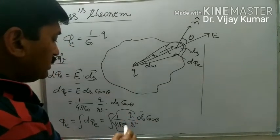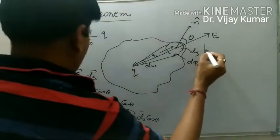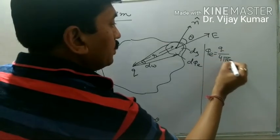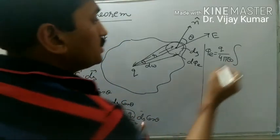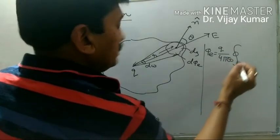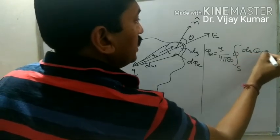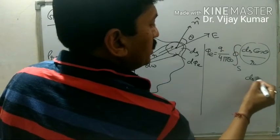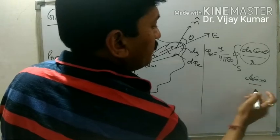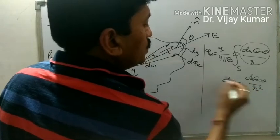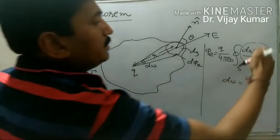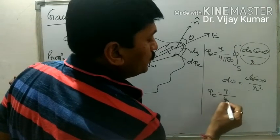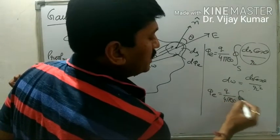We can take the constants outside the integration: phi e equals q upon 4 pi epsilon naught, and this is a surface integration of ds cos theta upon r square. In our previous video we proved that ds cos theta upon r square is equal to the solid angle d omega.